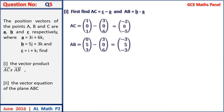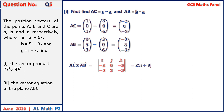Since AC is mentioned first, we place AC followed by AB in the cross product. The result is 25i plus 9j minus 10k.